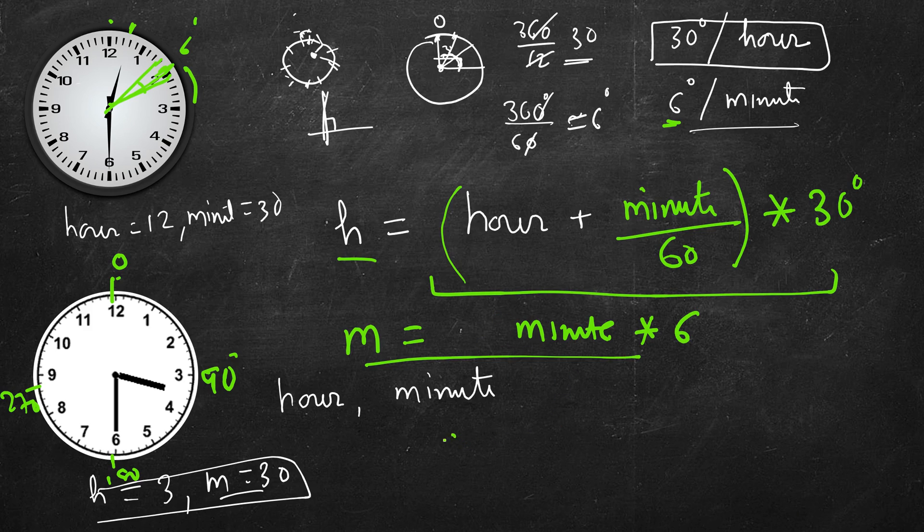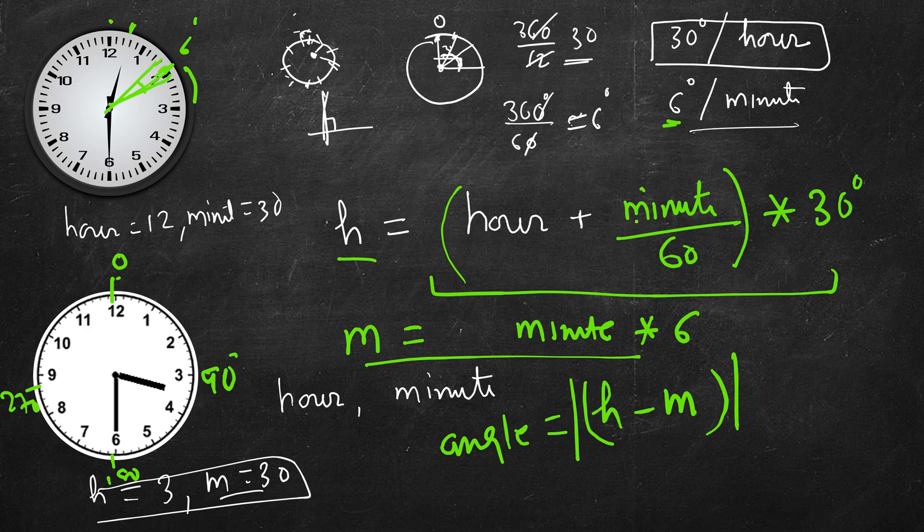So you take the difference. So angle equal to h minus m. You take the absolute value of this. So what is the maximum it can be? It can be here. Just before this 360, let's say 359 degrees and this can be the minimum, let's say 1 degree. So what will be the difference here? Difference will be 358 degrees and we know that this is more than 180.